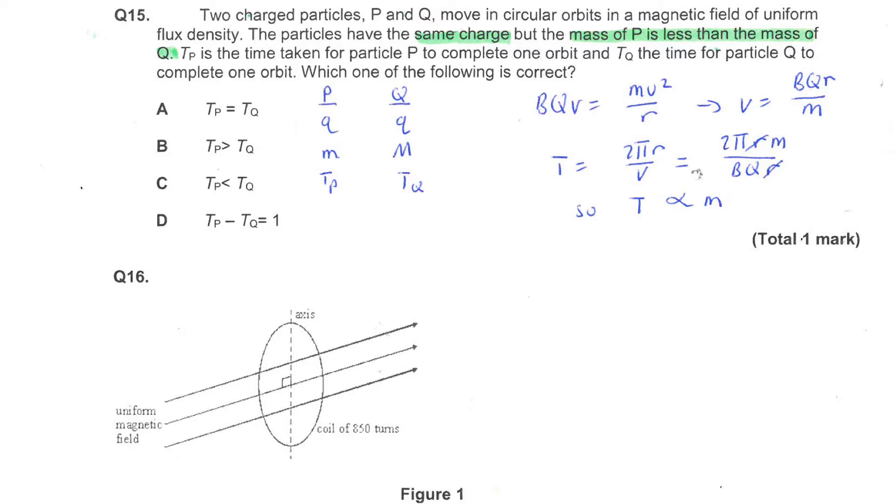So, two charged particles, P and Q, move in circular orbits in a magnetic field of uniform flux density. The particles have the same charge, but the mass of P is less than the mass of Q. I've just made myself a visual way of remembering that information.